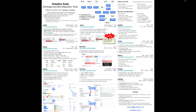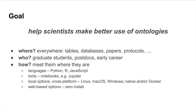The key is this graph of all the different tools that we've built and how they connect together. Our goal is to help scientists make better use of ontologies, and to a large extent that's about using software tools better. We want to use ontologies everywhere, and we want graduate students, postdocs, early career scientists, as well as senior scientists to use them.